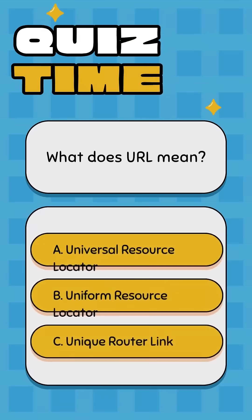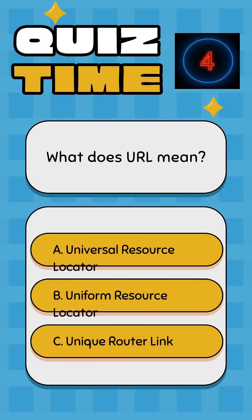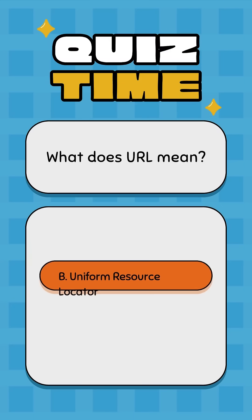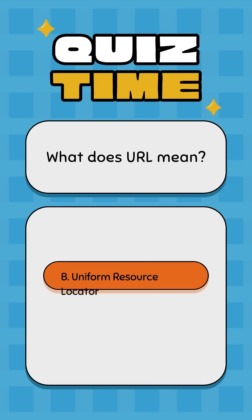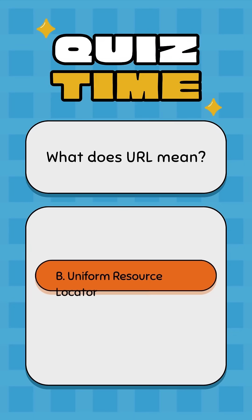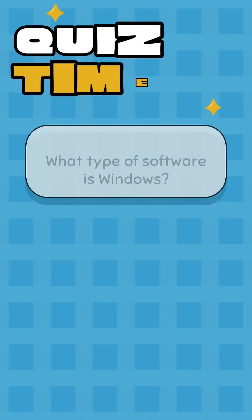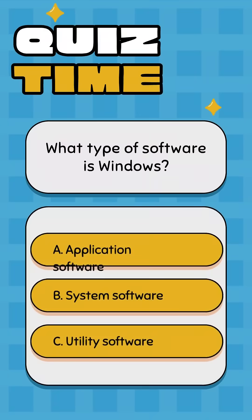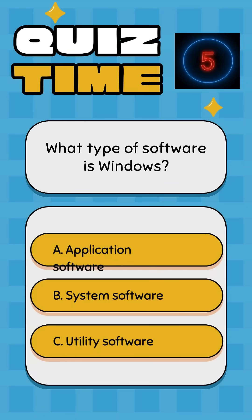What does URL mean? A: Universal Resource Locator, B: Uniform Resource Locator, C: Unique Router Link. Correct answer: B, Uniform Resource Locator.